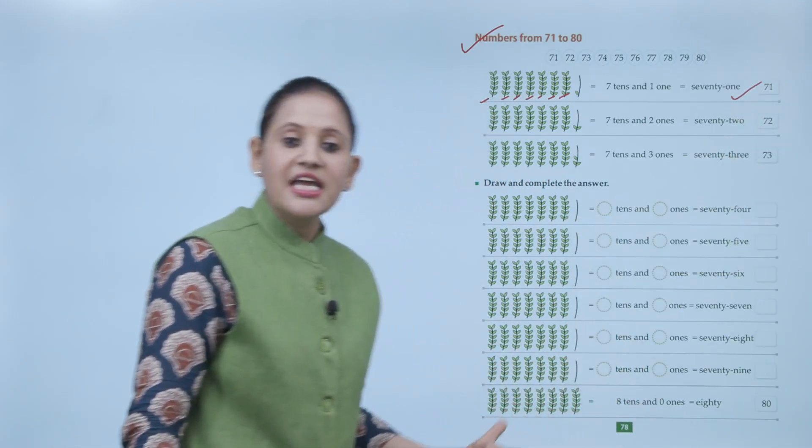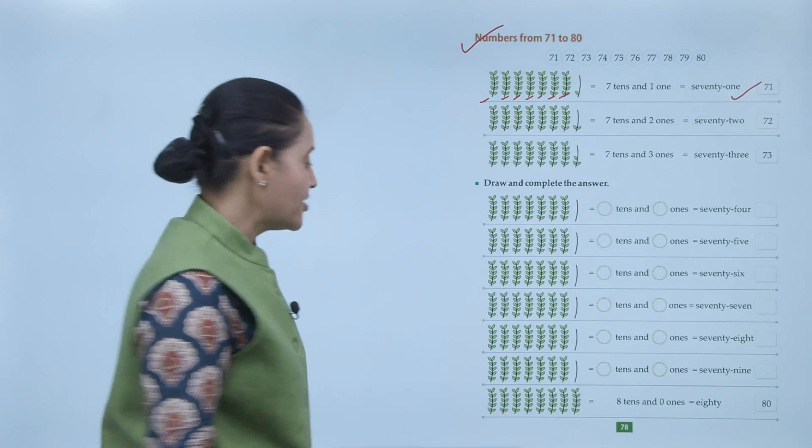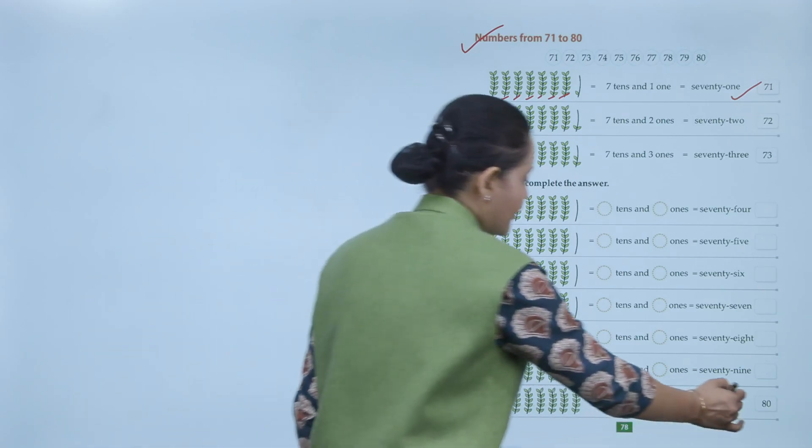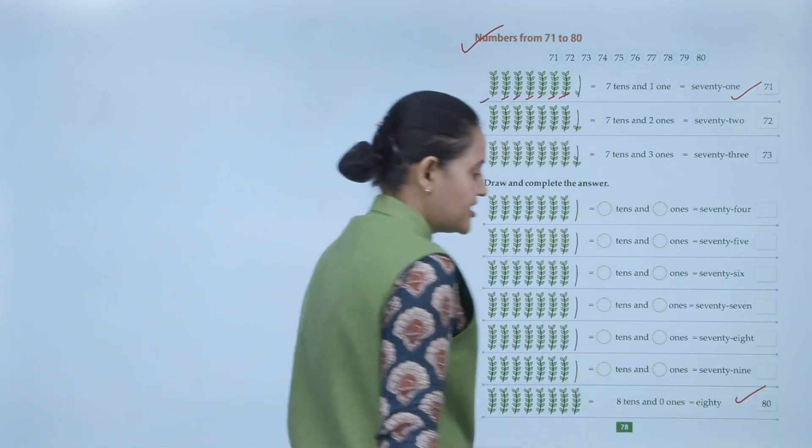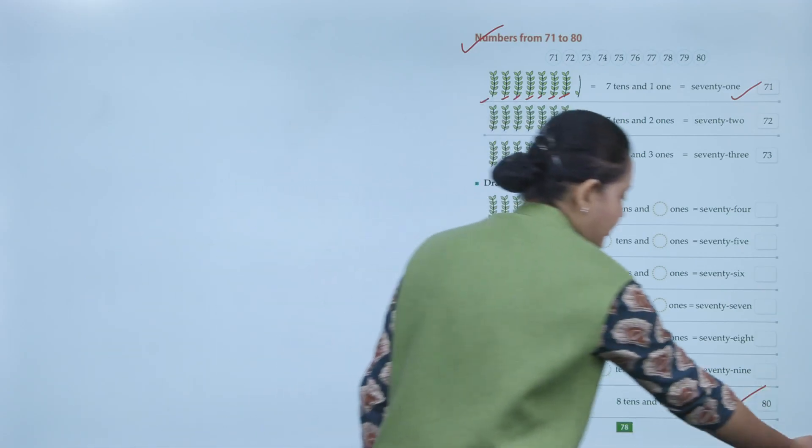Then comes 80 — meaning 8 tens and 0 ones — spelled E-I-G-H-T-Y, written as 8-0, which is 80.